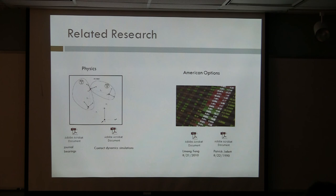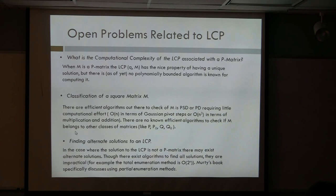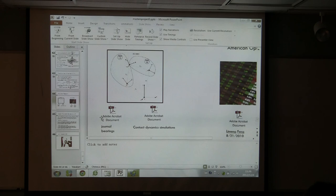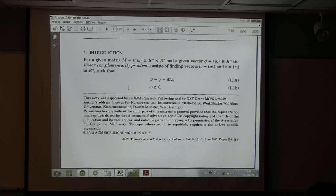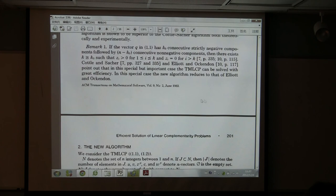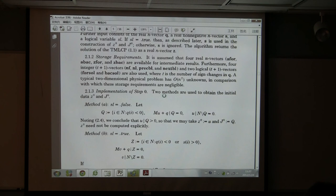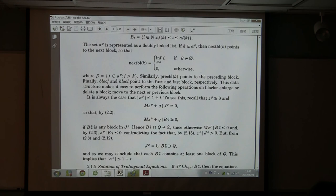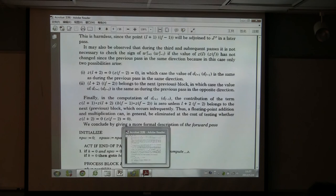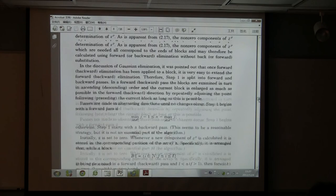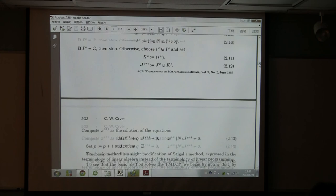Here are some papers I've looked at. Dr. Huang sent me this one on journal bearings. A journal bearing is basically when you have a bearing contained in a cylinder with a layer of fluid in between. He wants to describe the physics of what's going on there, so in order to do that he has to solve the linear complementarity problem to approximate a solution.